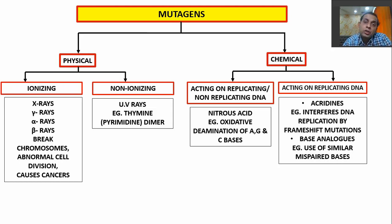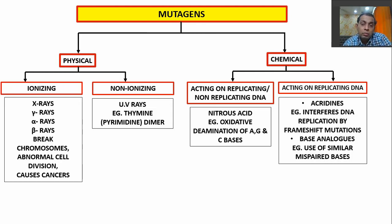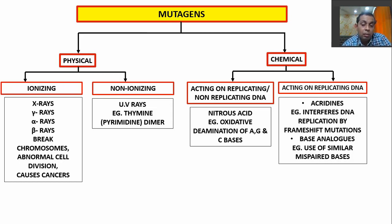Chemical mutagens that act during replication can cause insertions or deletions. Another example is base analogs — these are nucleotide duplicates that attach to particular areas of the DNA in place of normal bases, causing mispairing and mutation.